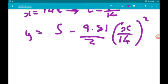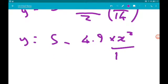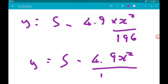So if we sharpen that up a bit, we can say that y is 5 minus, so 9.81 over 2 is 4.905, so let's just call that 4.9, and then we got times x squared over 14 squared, which is... So we can say y is 5 minus 4.9 x squared over 196.